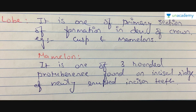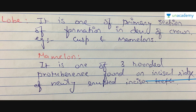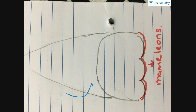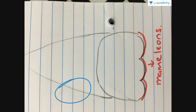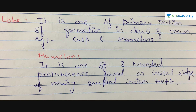A lobe is one of the primary sections of formation in the development of a crown — for example, cusps and mammalons. A mamellon is one of three rounded protuberances found on the incisal ridges of newly erupted incisor teeth. You can see this type of shape on central and lateral incisors. A single one is called a mamellon and multiple are called mammalons. These are seen in young children whose incisors have newly erupted, and lobes help in the formation of these cusps and mammalons.